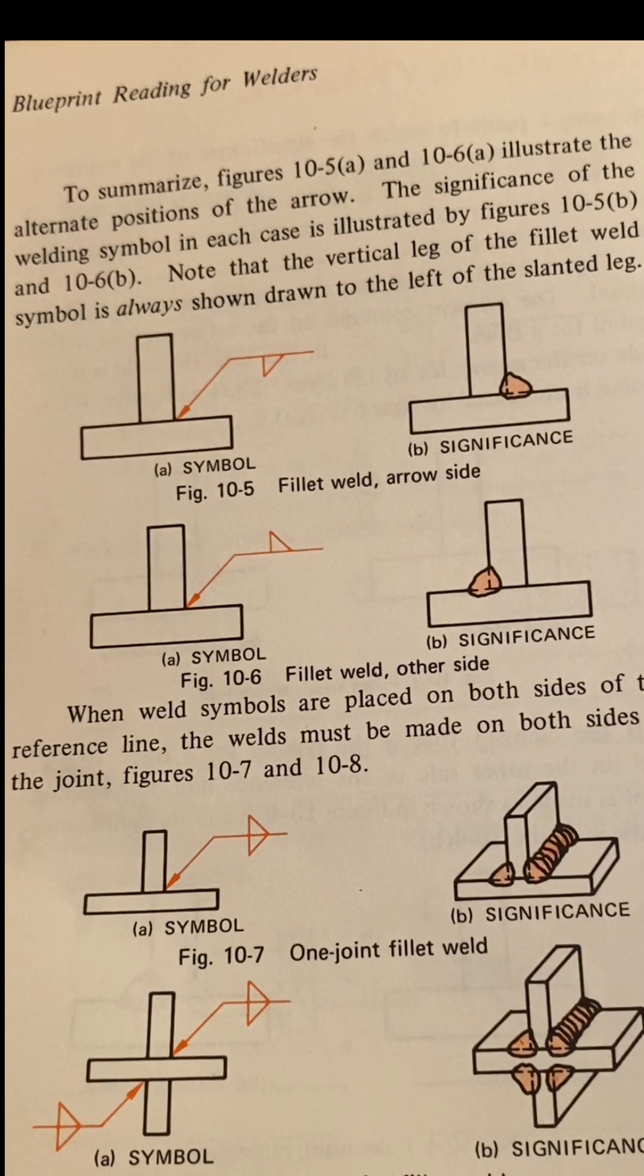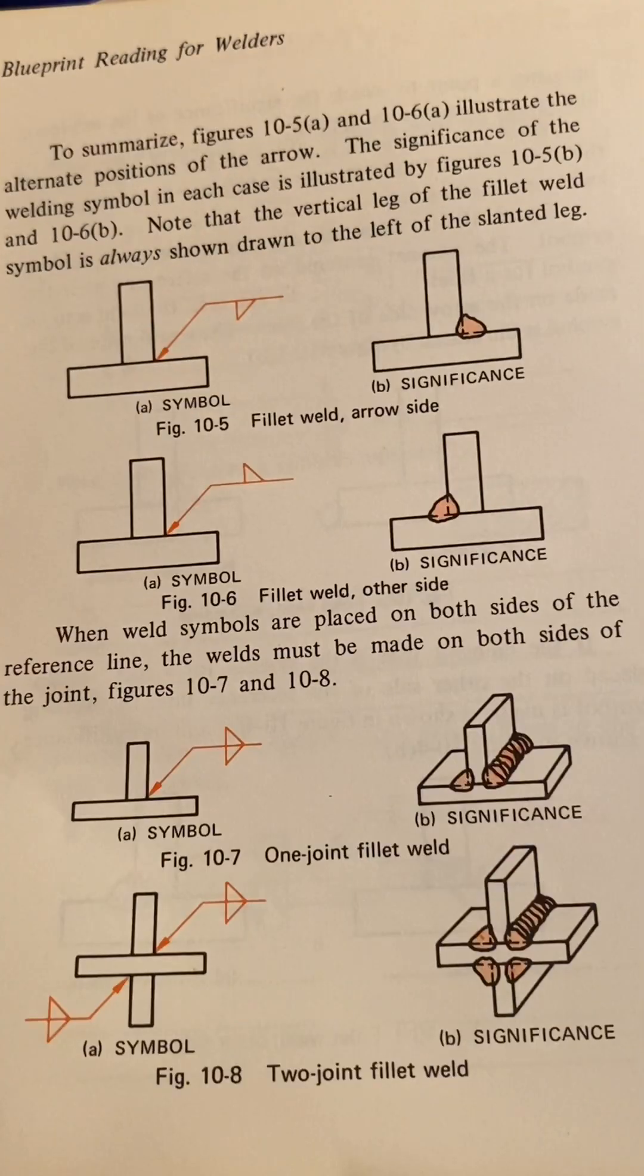To summarize, figures 10-5A and 10-6A illustrate the alternate positions of the arrow. The significance of the welding symbol in each case is illustrated by figures 10-5B and 10-6B.